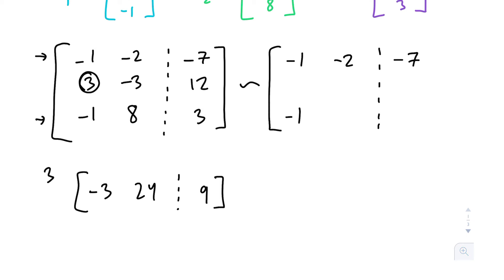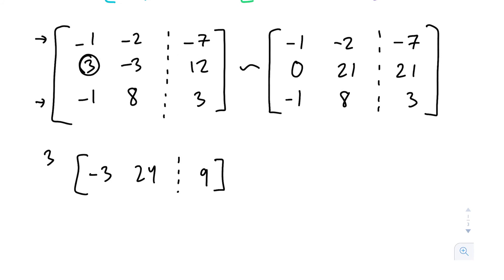Notice that we're not changing row 1 or row 3. All we're doing is modifying one row at a time. So then we're going to add them together. 3 plus negative 3, that's 0. Negative 3 plus 24 is 21. 9 plus 12 is 21 as well. All right. So if we wanted to describe that row operation, it would be R2 plus 3R3, and then we put that back into R2.